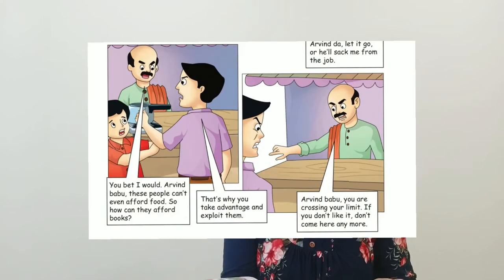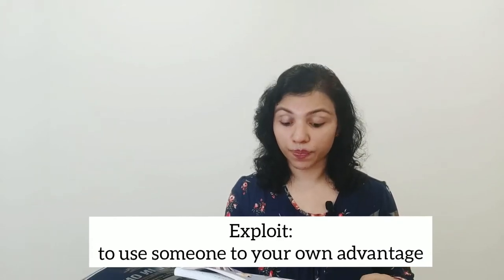The owner gets very angry and says that these people cannot even afford food, so how can they afford books — there is no way Raju can go to school. He becomes very arrogant. That makes Arvind very angry. Arvind says: 'That's why you take advantage and exploit them.' Exploit means to use someone for one's own benefit. Just because this boy is an orphan with no money, that is why you are taking advantage of him. The tea stall owner is furious: 'Arvind Babu, you are crossing your limit. If you don't like it, don't come here anymore.'